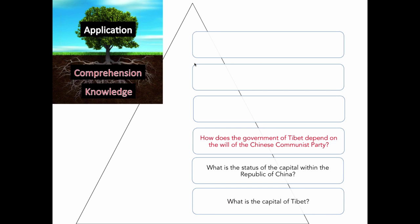The second level of the hierarchy is comprehension, and that might be demonstrated by a question like, 'What is the status of the capital within the Republic of China?' — this is demanding a different sort of intellectual response to the underlying ideas. The third level addresses application, and the question suggested here is: 'How does the government of Tibet depend on the will of the Chinese Communist Party?'